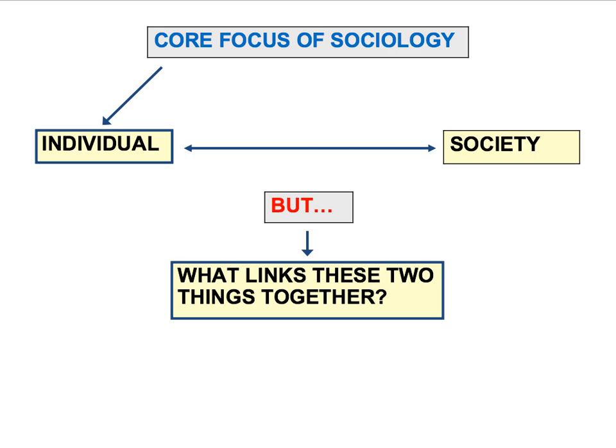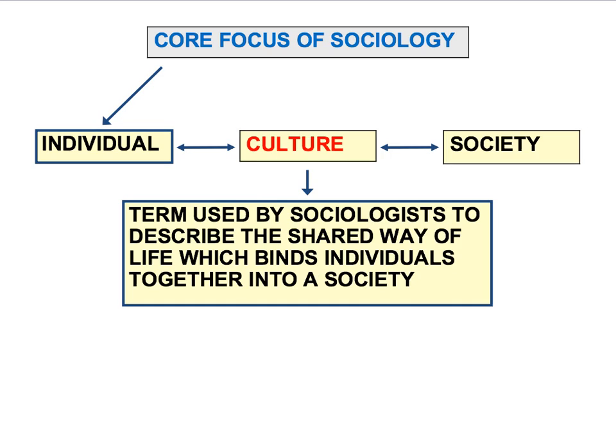Sociology is a social science that studies the relationship between the individual and wider social forces — the wider society. A key question is what links these two things together. One of the most important things that links individuals to wider society is a shared culture. Culture is a term used by sociologists to describe the shared way of life which binds individuals together into a society, and many sociologists argue that it really holds society together and is the basis of social order.